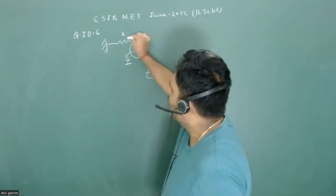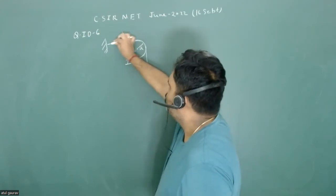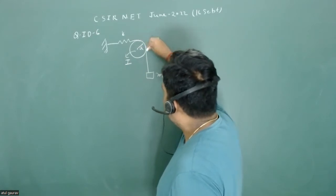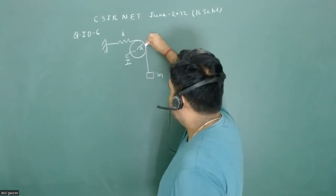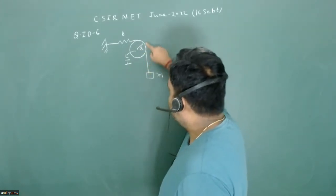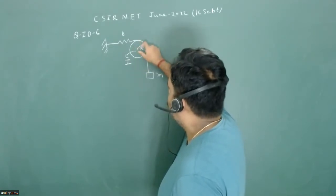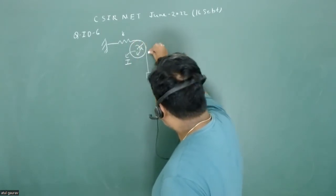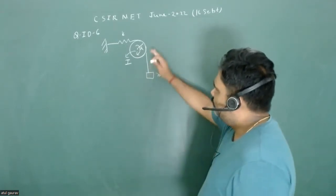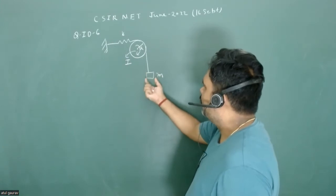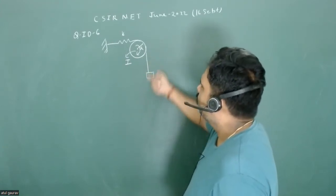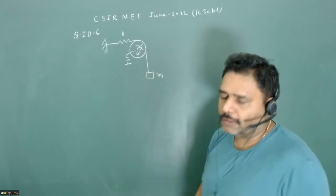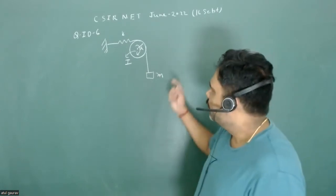There is a massless wire attached to a spring, and this spring will always remain horizontal. The wire is rolled over a particular pulley — it touches the pulley but will not slip on it. If the pulley rotates, the wire moves downward, pulling the mass a distance x. Due to the restoring force from the spring, this mass will undergo oscillatory motion. We have to find the angular frequency for small oscillations.